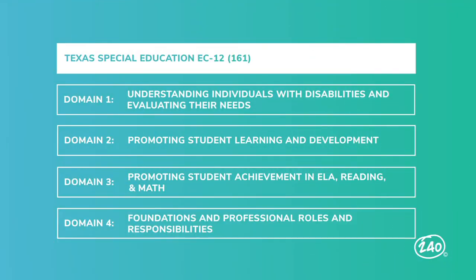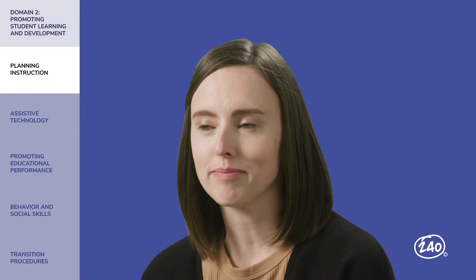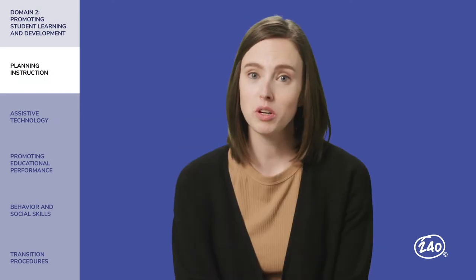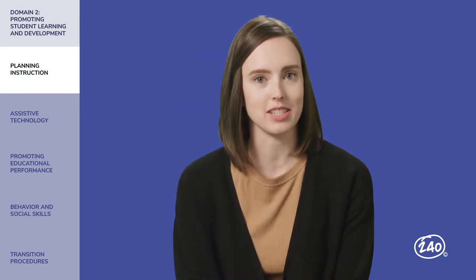Now we'll dive into domain two. This is one of the biggies — it's worth one-third of your score. Competencies three through seven fall under it. Planning instruction: two simple words that carry so much weight for a teacher.